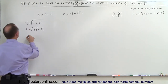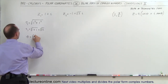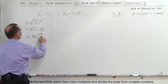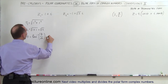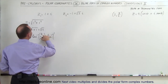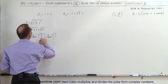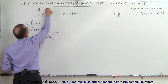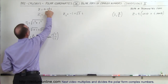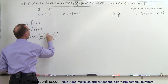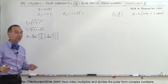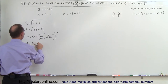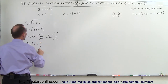Next we need to find theta. We find theta by taking the arctangent of the opposite side — the imaginary part — divided by the adjacent side — the real part. In general, z equals a plus bi, so here that is the arctangent of b over a, which is the arctangent of 1 divided by 1. That gives us 45 degrees, which equals pi divided by 4.